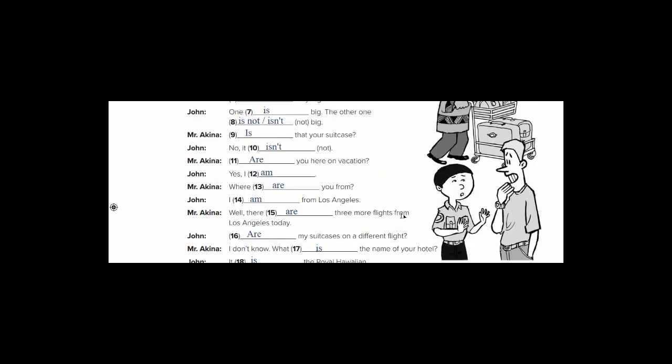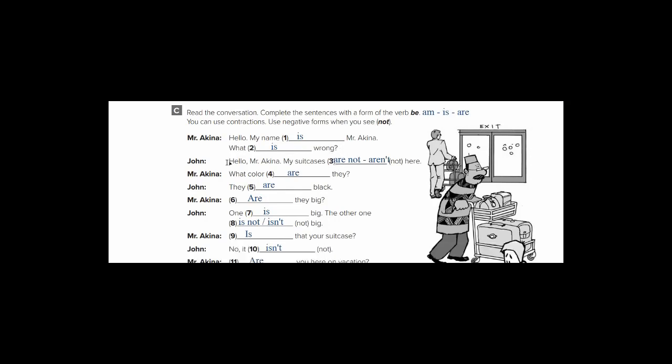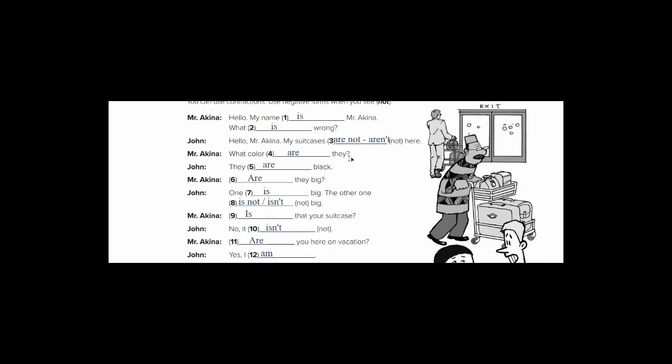Let's revise the conversation. It is Mr. Akina in the airport services. He said, hello, my name is Mr. Akina. What is wrong? John: Hello Mr. Akina, my suitcases are not here. What color are they? They are black. Are they big? One is big, the other one is not big.